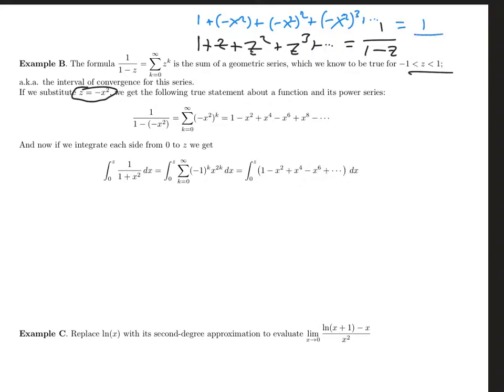And then on the right-hand side, it'll be 1 over 1 minus negative x squared. So I've changed the z's to be minus x squared, and I've carried parentheses with that so that I'm sure that I'm doing the substitution correctly.